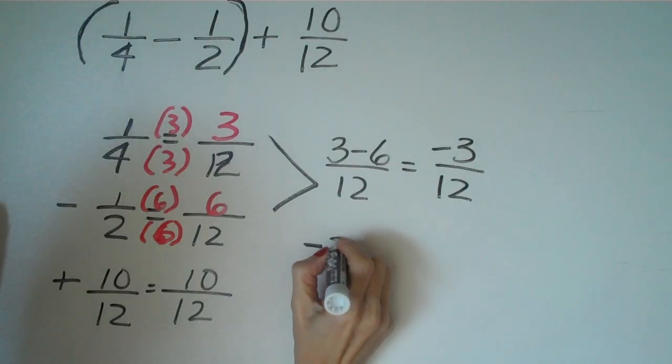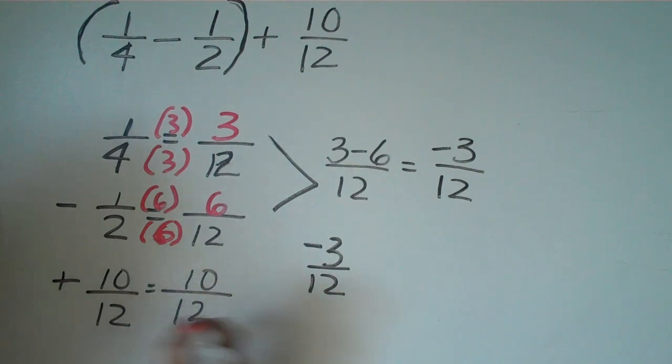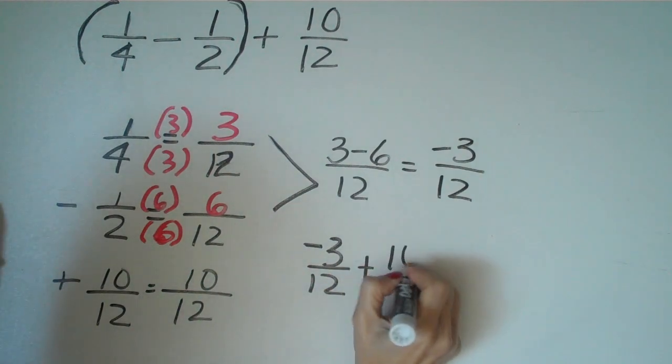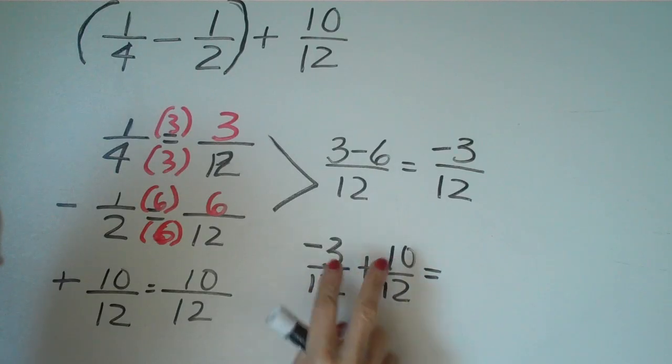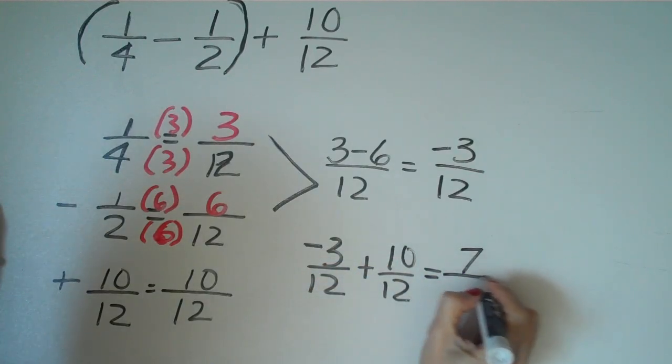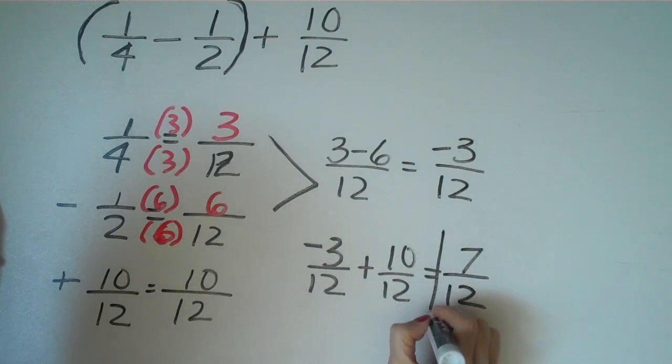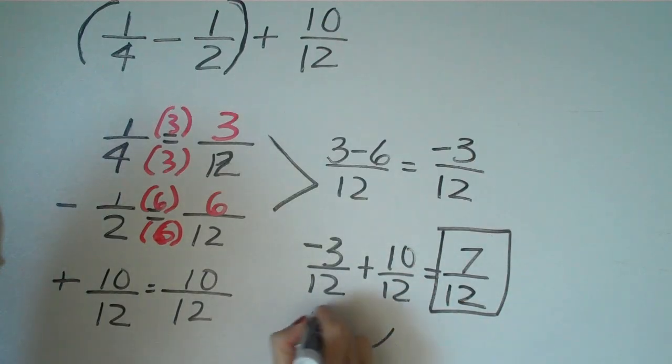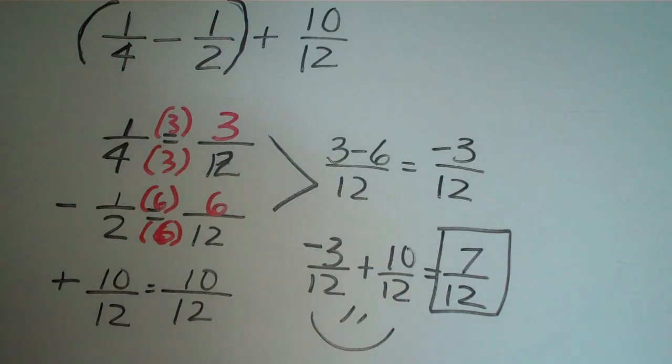And we don't want to reduce it yet because we're still not done. We have to take now negative 3 over 12 and we're going to add, because that's what the problem said to do, 10 out of 12. So now we have different signs. We're going to subtract and we get a 7 over 12. And that is our final answer. And I would suggest that you replay this video to slow it down for yourself and practice.